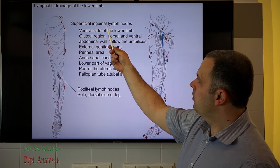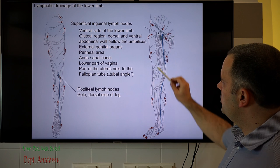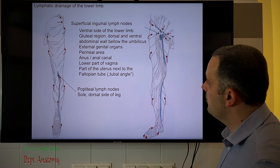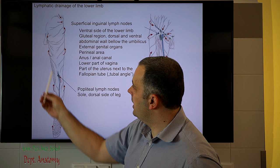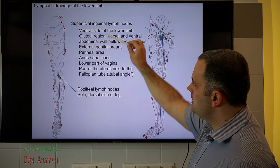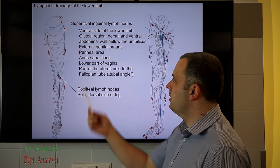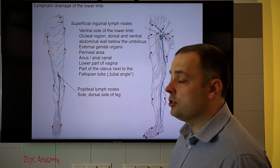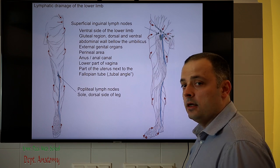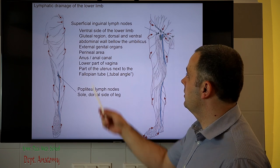The most important group of lymph nodes is located next to the inguinal ligament — the superficial inguinal lymph nodes, which drain the ventral aspect of the lower limb as well as important areas on the dorsal side. As a clinician, if you find tender, large superficial inguinal lymph nodes, you must investigate the areas they drain.